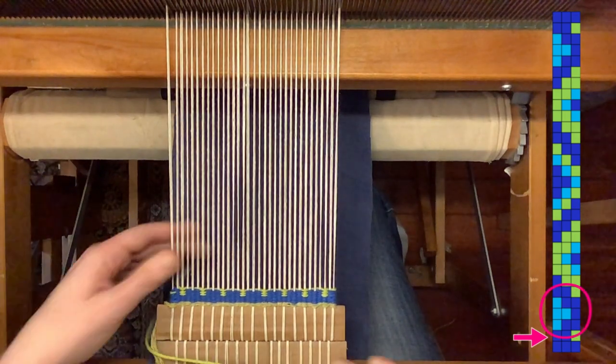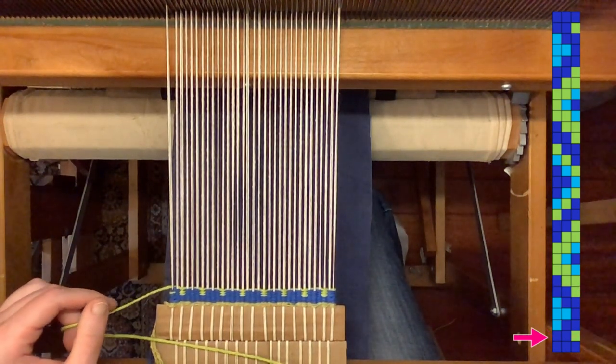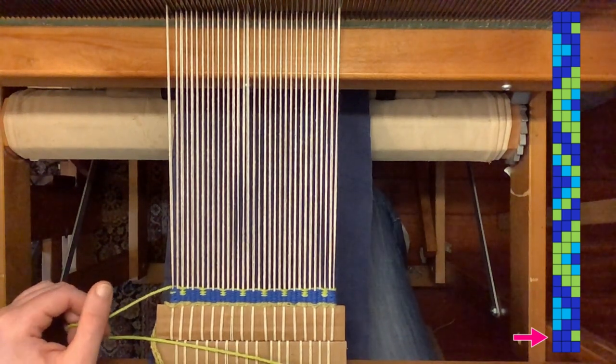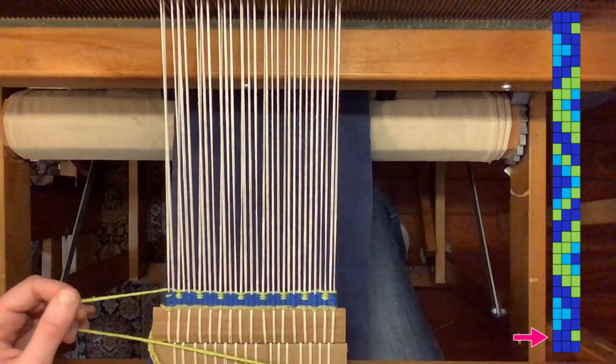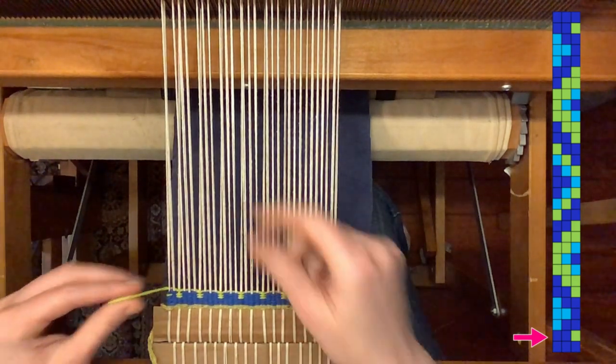Looking at my pattern chart, you can see that we're already done with green. We won't use it for the next couple blocks, so I'm going to cut it off and weave it in at this point. So I'll trim it and then wrap it around the edge thread.